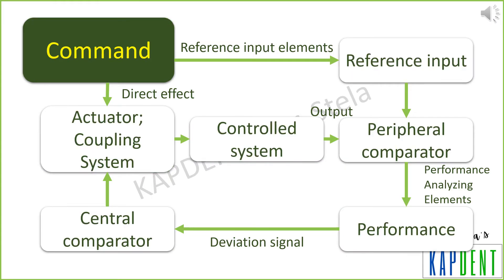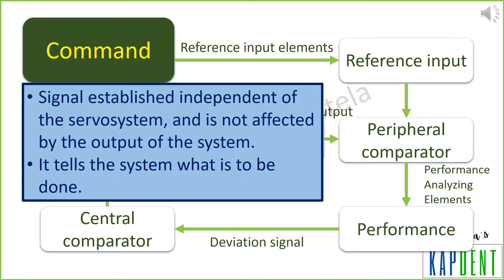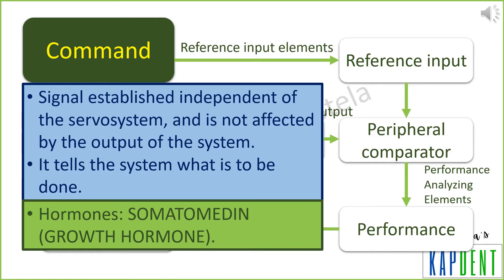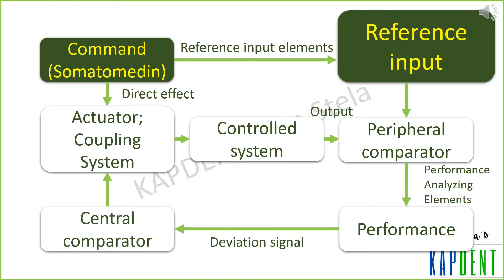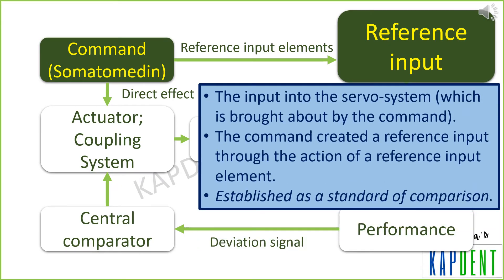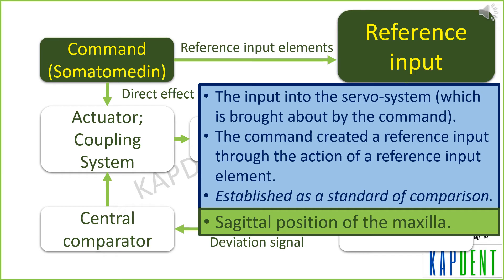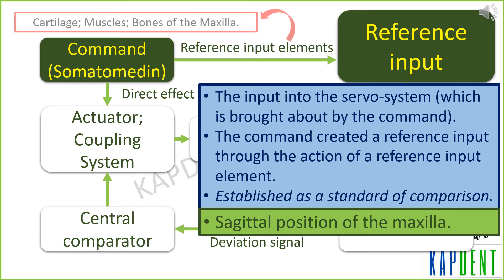The first component is the command — a signal which is not affected by the output. It tells the system what is to be done and it includes hormones, specifically somatomedin in the case of growth. The next component is the reference input, which is the input created by the action of the command. In our case, it refers to the sagittal position of the maxilla, which is established by the action of somatomedin through its action on various reference input elements, which include the cartilage, muscle and bone of the maxilla.